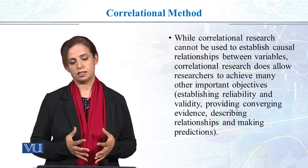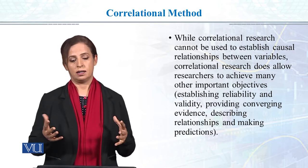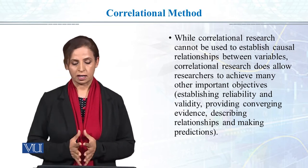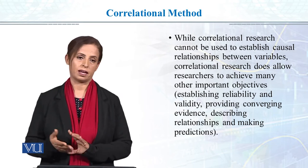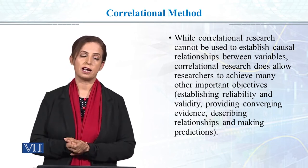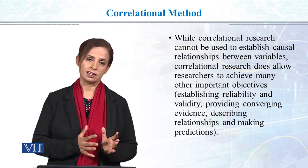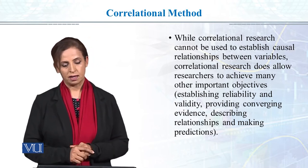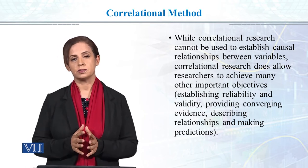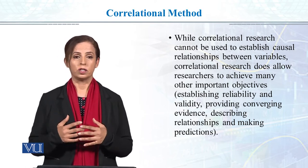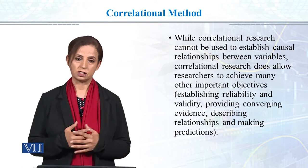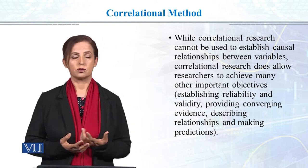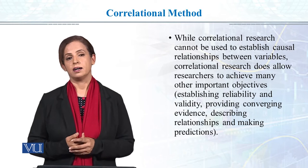Correlational research allows you to establish a relationship between variables and provides converging evidence to describe that relationship. Your correlation is always a coefficient ranging from 0 to 1. The technique we mostly use to answer questions about relationships between variables is the Pearson product-moment correlation, which is a bivariate correlation — meaning you find the relationship between two variables.